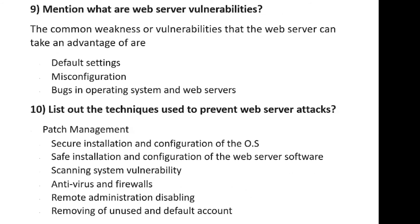What are web server vulnerabilities? The common weaknesses or vulnerabilities that a web server can be exposed to include default settings, misconfiguration, and bugs in the operating system and web servers. To prevent web server attacks, you should perform patch management, secure installation and configuration of the OS, safe installation and configuration of the web server software, scan for system vulnerabilities using specific third-party applications, install antivirus and firewalls, manage remote administration, and disable or remove unused and default accounts.